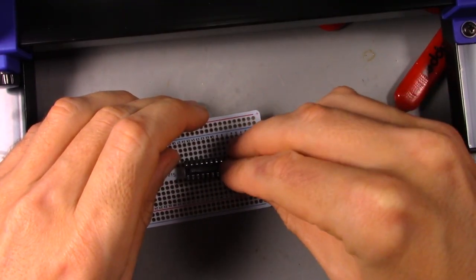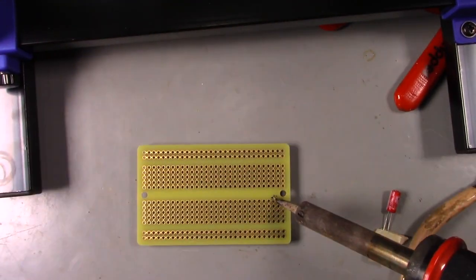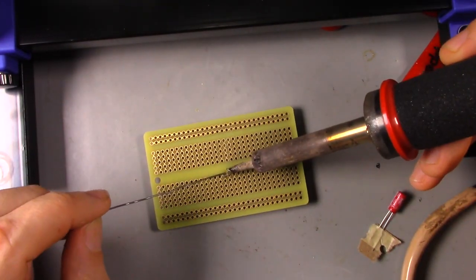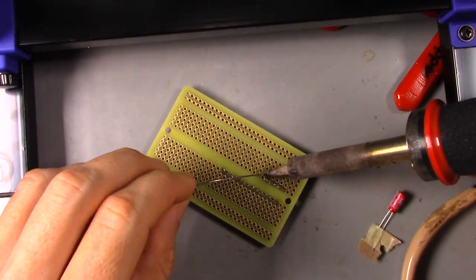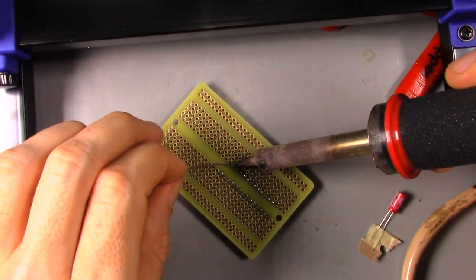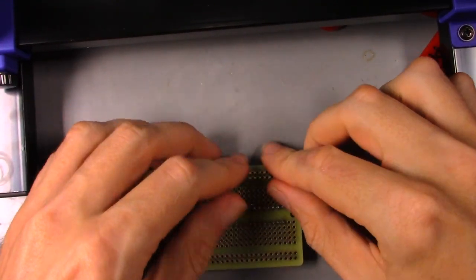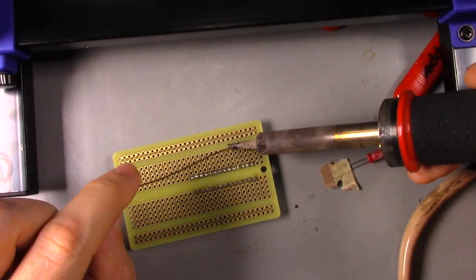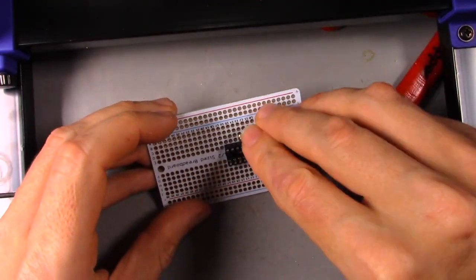I always like starting projects with any and all chip sockets that the project might require. This gives a solid reference point for the rest of the build. After that will be the DIP switches to set the MIDI address and the crystal to run the oscillator on the microcontroller.